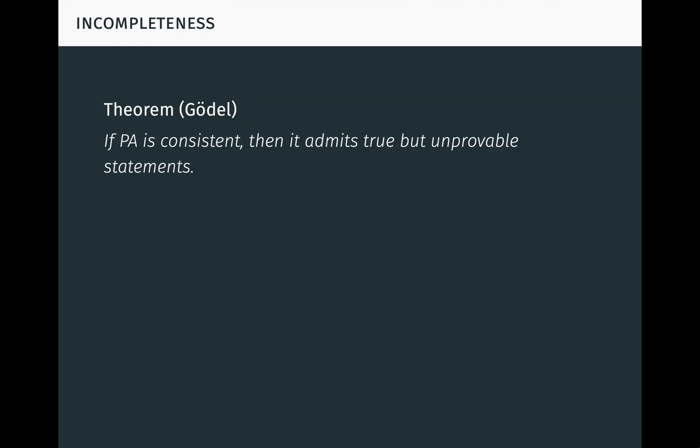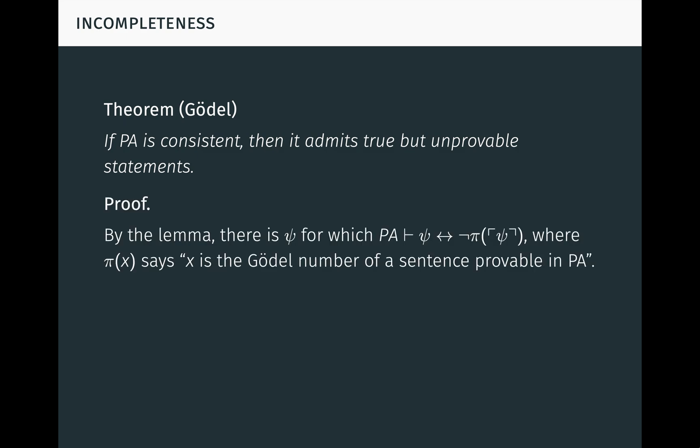At this point, we can easily prove Gödel's first incompleteness theorem. It says that if Peano arithmetic is consistent, that is, if it doesn't prove a contradiction, then it admits true but unprovable statements.